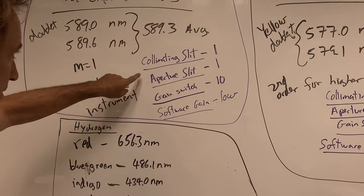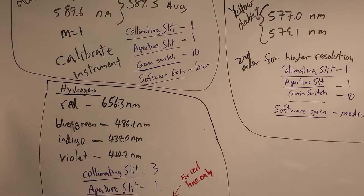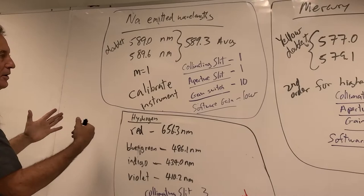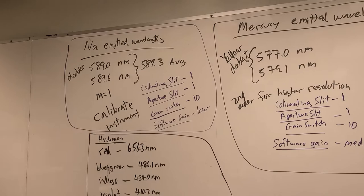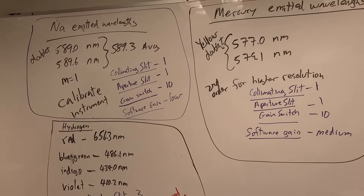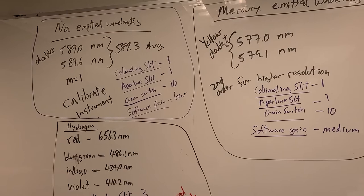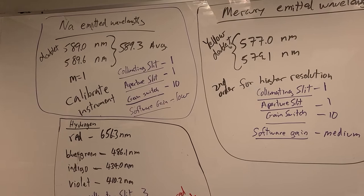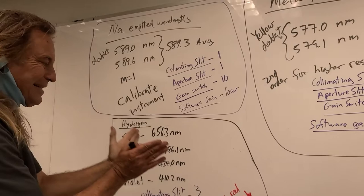The settings on the instrument for this experiment: the collimating slit will be at setting one, aperture slit setting one, and the gain switch at 10. When the light hits the photovoltaic material and pops electrons off, creating an electric current — that's called a photocurrent — the gain switch will be a factor of 10. The software gain for that measurement will be on the low setting. After we confirm our instrument is seeing this wavelength at the correct angle, we know it's calibrated.